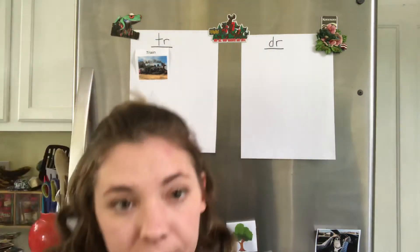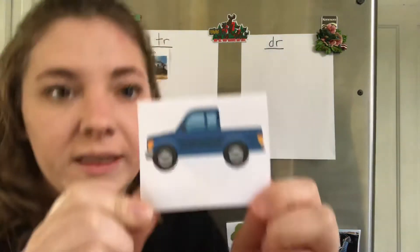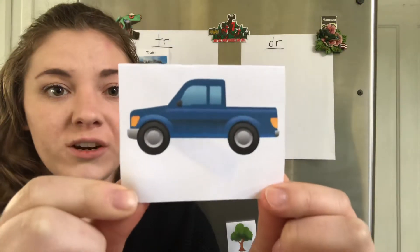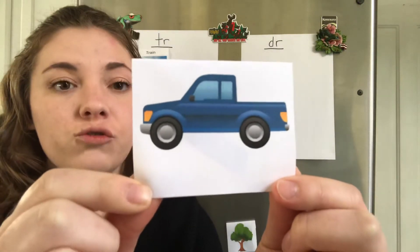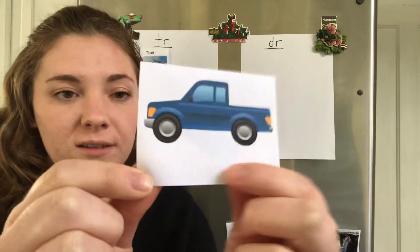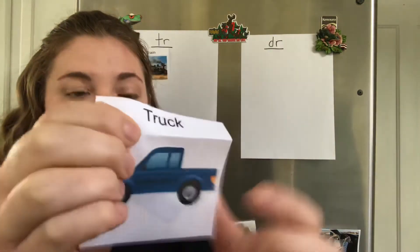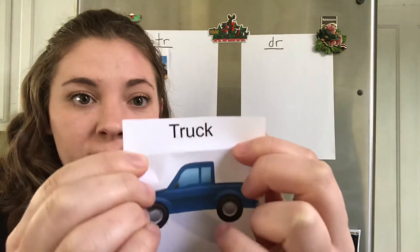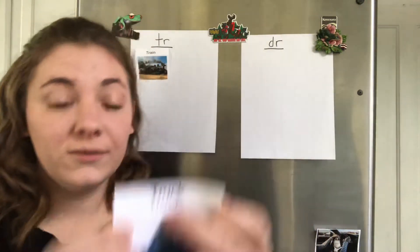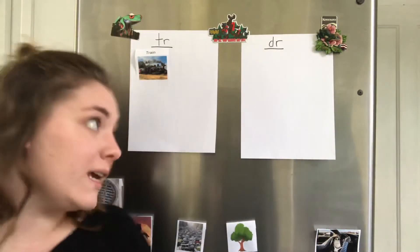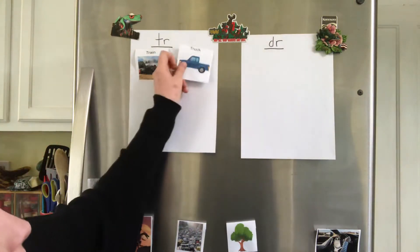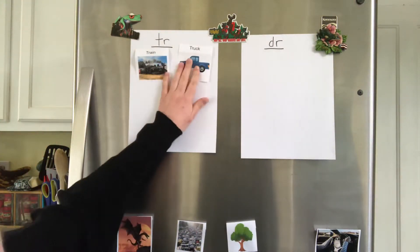Let's look at this one next. This is a picture of a truck. T-truck. Spelled with a T-R again — TR. We hear that in the beginning, so we're gonna put this on the TR side as well.